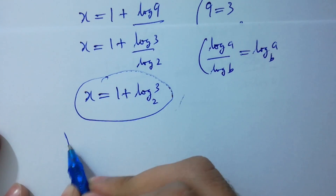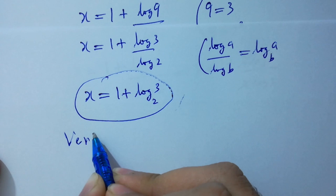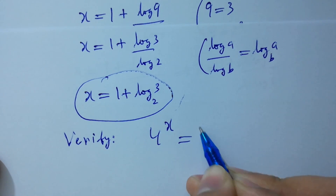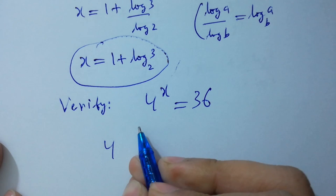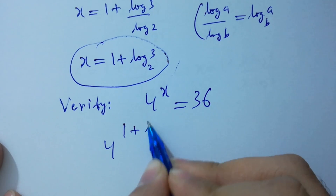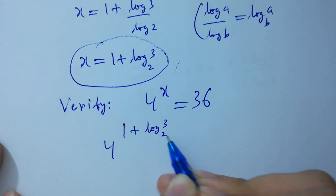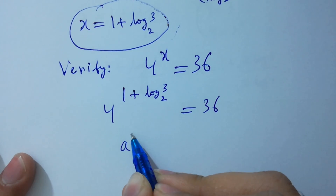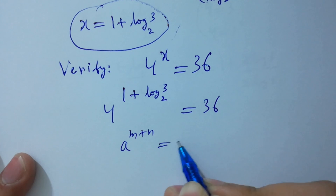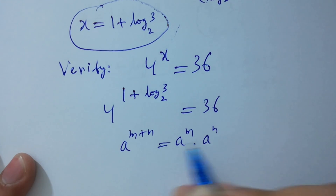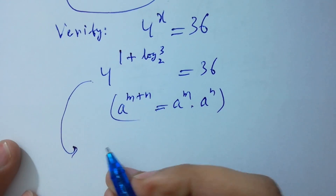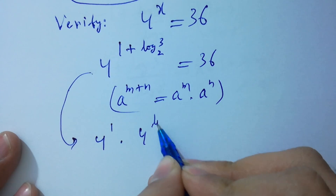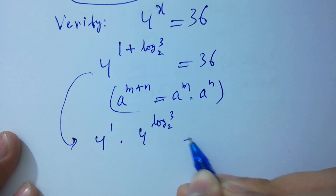Now let's verify. 4 to the power x equals 36. So 4 to the power 1 plus log 3 to the base 2 equals 36. As a to the power m plus n equals a to the power m times a to the power n, we have 4 to the power 1 times 4 to the power log 3 to the base 2 equals 36.